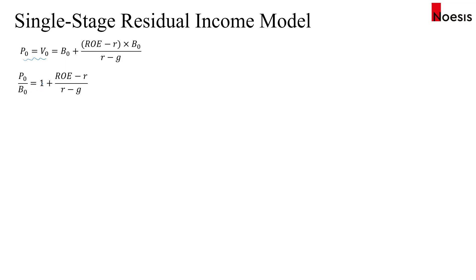This is what we call the justified price-to-book multiple, and it gives insight into what drives the price-to-book ratio. If ROE equals R, the second term is zero, so the price-to-book ratio equals 1 — meaning the market perceives the company will just generate sufficient returns to cover the required return.